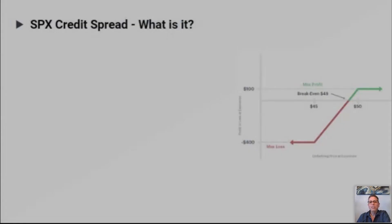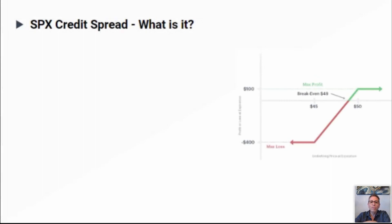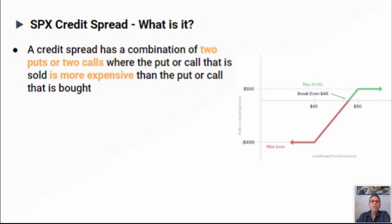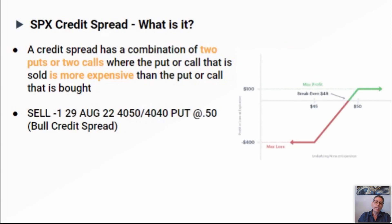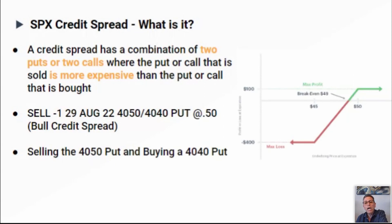Let's first talk about an SPX credit spread, because these are the trades I use to gain income month over month. A credit spread is a combination of two puts and two calls where the put or call that is sold is more expensive than the put or call that is bought. So basically when you put on this trade, you're selling it and getting a credit. You sell it and then buy it back at the end. That's called a vertical spread — it gives you a credit and it's a high probability trade.